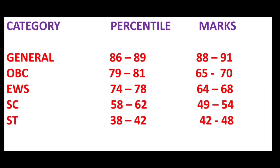Here are the expected percentiles and marks for various categories of students. A General category student needs to secure a percentile between 86 and 89, and needs to get marks between 88 and 91. An OBC student needs to get a percentile between 79 and 81, and marks between 65 and 70. An EWS category student needs to get a percentile between 74 and 78, and marks between 64 and 68.